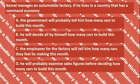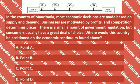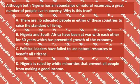Kamal manages an automobile factory. If he lives in a country that has a command economy — which describes how most countries around the world answer basic economic questions. In the country of Mauritania, most economic decisions are made based on supply and demand. Businesses are motivated by profits and competition determines prices. There is a small amount of government regulation, but consumers usually have a great deal of choice. Where would this country be positioned on the economic continuum? Nigeria's government controls its oil industry, but citizens can start their own businesses — which economic system does Nigeria have? Although Nigeria has an abundance of natural resources, a great number of people live in poverty. Why is this true?